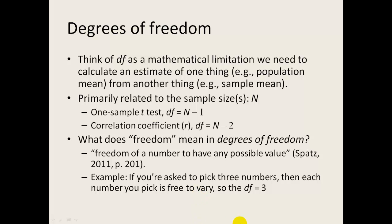So what does freedom mean in this statement degrees of freedom? Well, according to Spatz, he says freedom of a number to have any possible value. So, for example, if you're asked to pick three numbers, then each number you pick is free to vary, so you would have three degrees of freedom. Because if you say pick three numbers, period, you literally could mean somebody could pick 11,526 as their number. But if you start to impose some limits on that, saying three numbers between one and ten, then you would actually end up with two degrees of freedom because you've imposed a limitation on what those numbers can be. If you set three different numbers between one and ten, that would reduce your degrees of freedom to one.